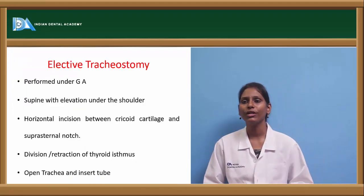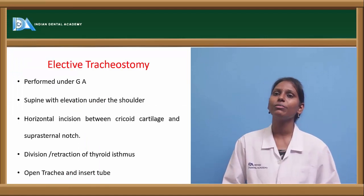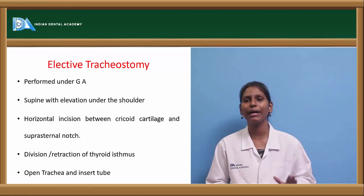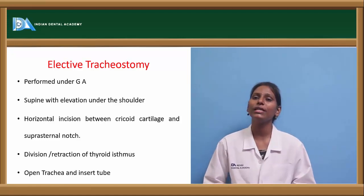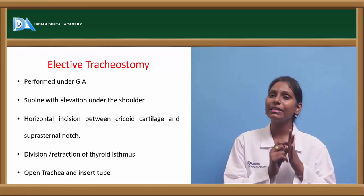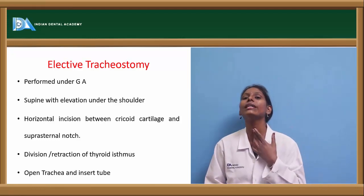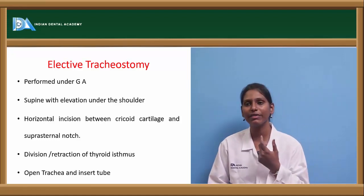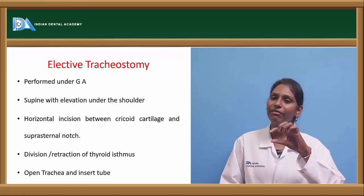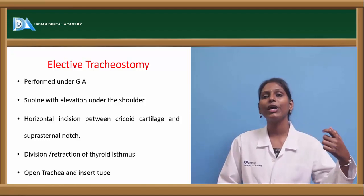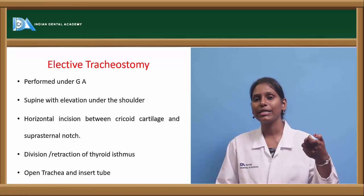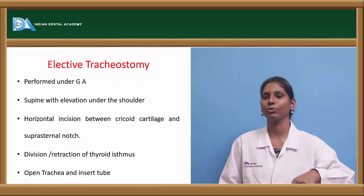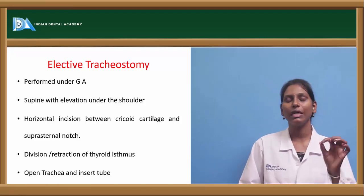Types of tracheostomy tubes include fenestrated and non-fenestrated tubes. Elective tracheostomy is performed under general anesthesia. The patient is laid supine with elevation over the shoulder. A horizontal incision is given between the cricoid cartilage and the suprasternal notch. The thyroid isthmus is divided or retracted, the trachea is exposed, and the tube is inserted.